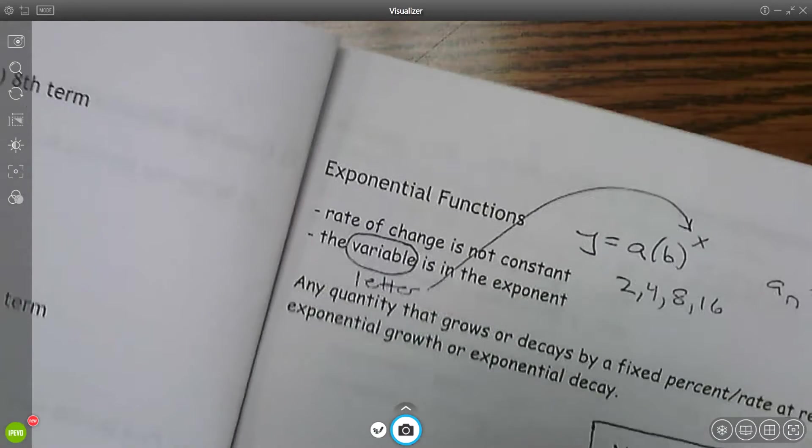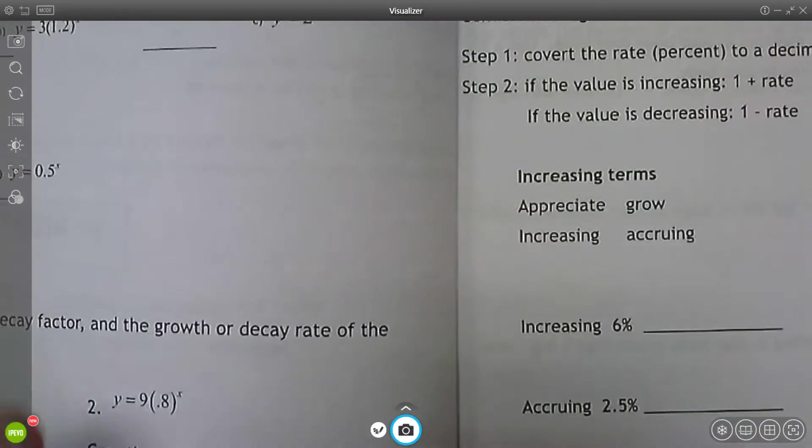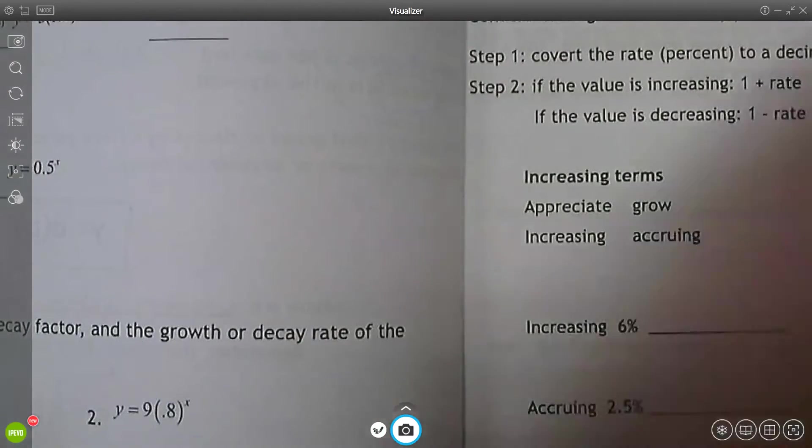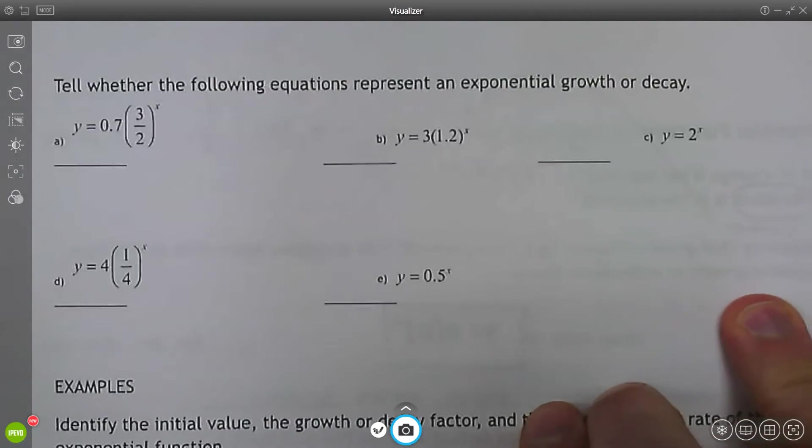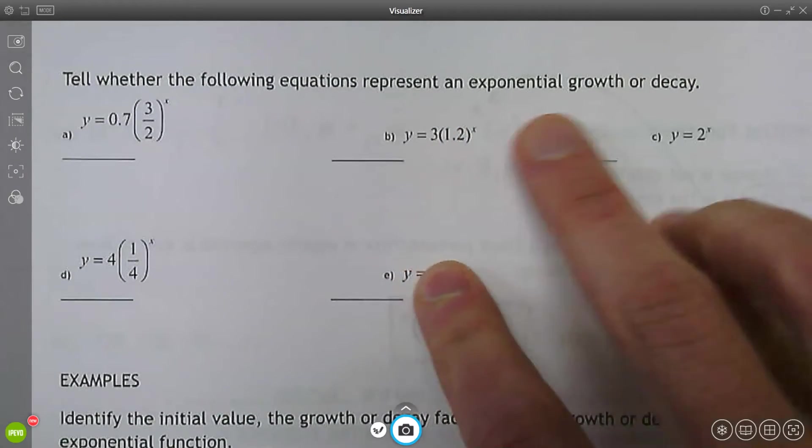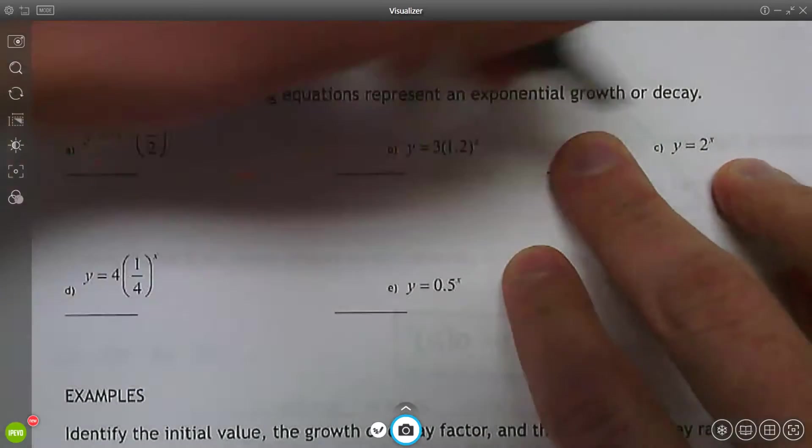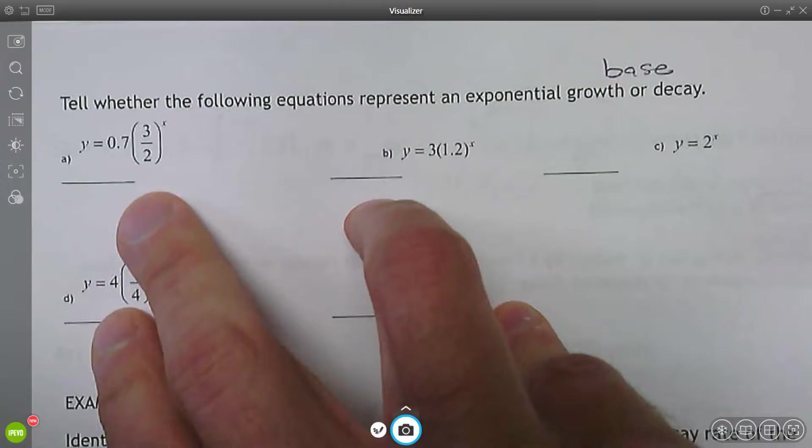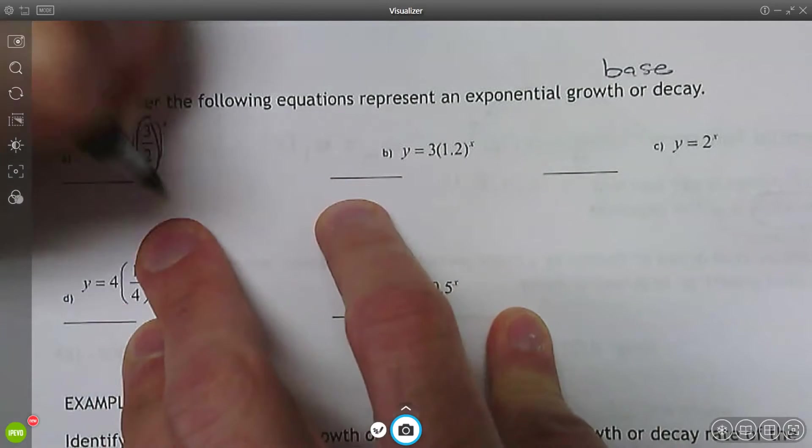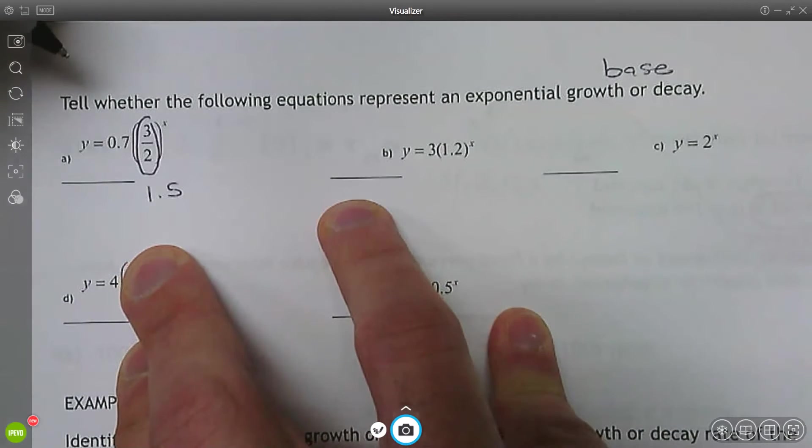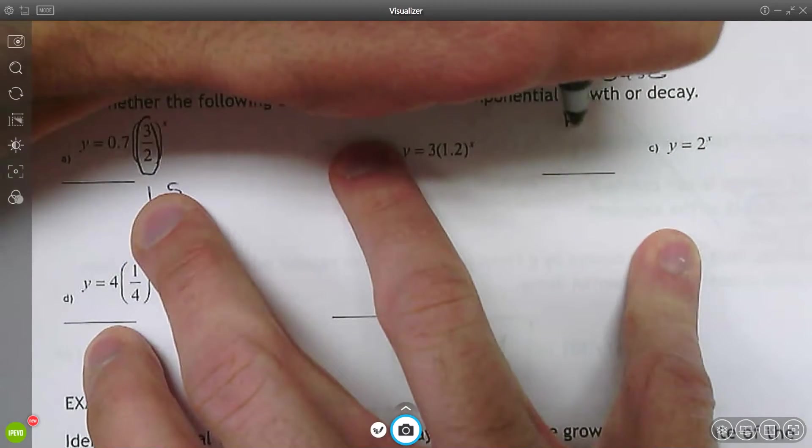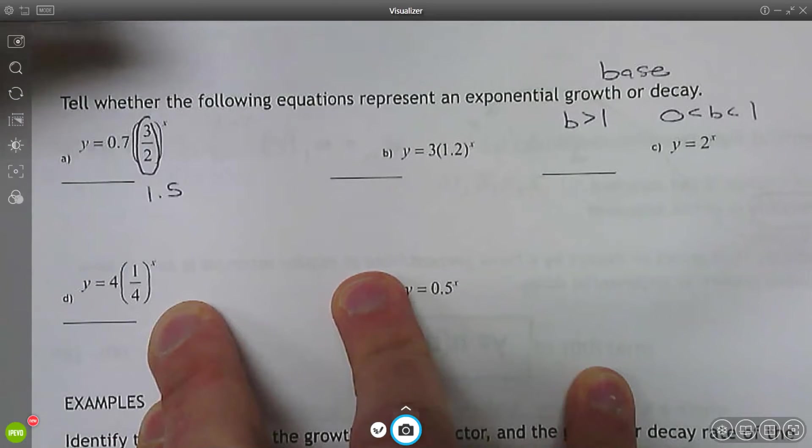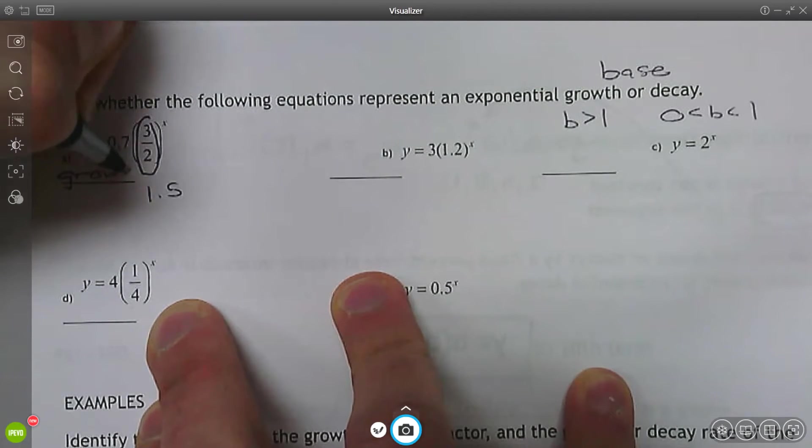Okay, moving on to page 8. This next section just asks you to determine is the following equation exponential growth or decay. So we're going to look at the base. So here the base is three divided by two. If you divide three by two, you get 1.5. Growth is if the base is bigger than one, decay is if the base is between zero and one. So here, this would be exponential growth.